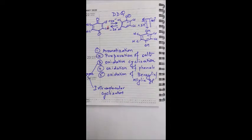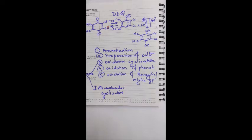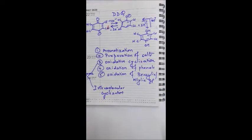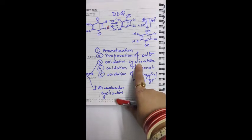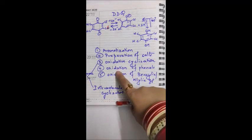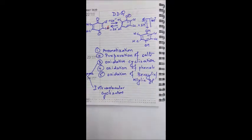The various types of reactions DDQ shows include: aromatization of cyclic compounds that can be aromatized, such as porphyrins and reduced naphthalene derivatives. The second application is preparation of stable salts of aromatic compounds. The third is oxidative cyclization, including intramolecular cyclization within the molecule. The fourth is oxidation of phenols, and the fifth is oxidation of benzylic or allylic groups.